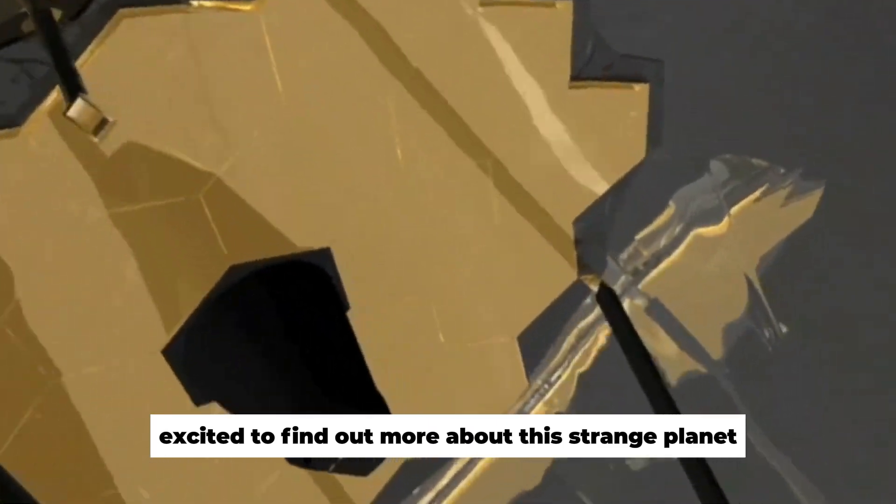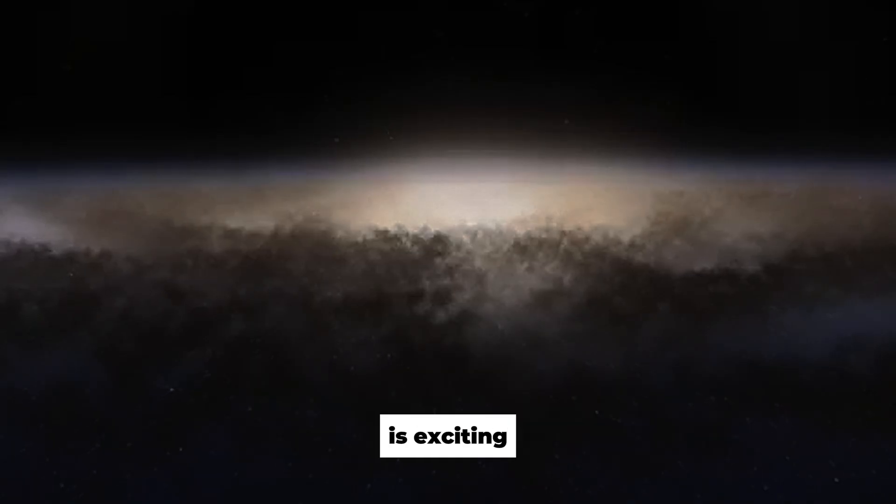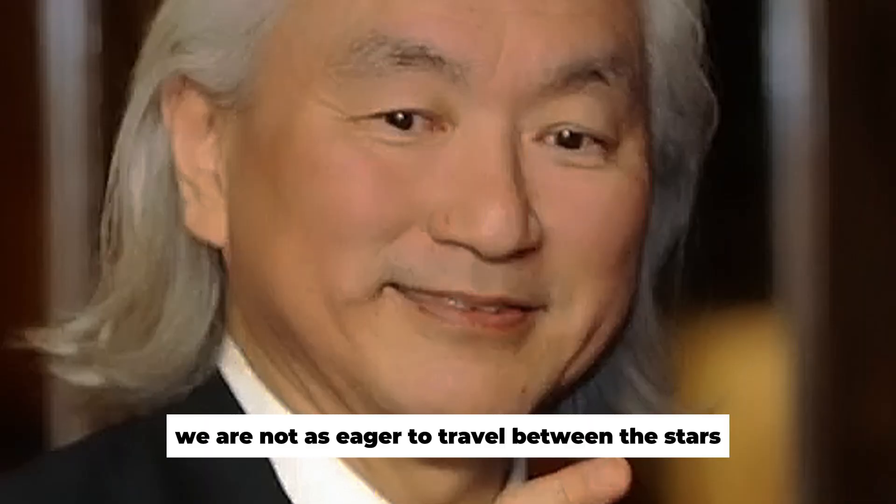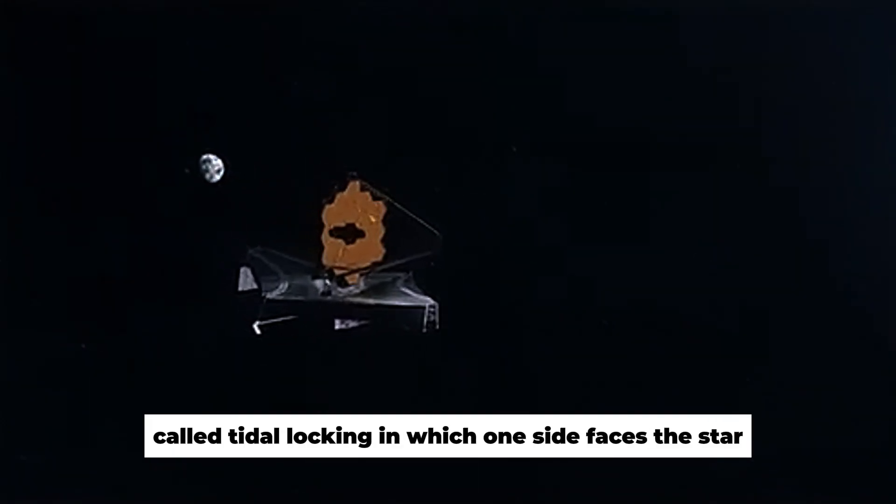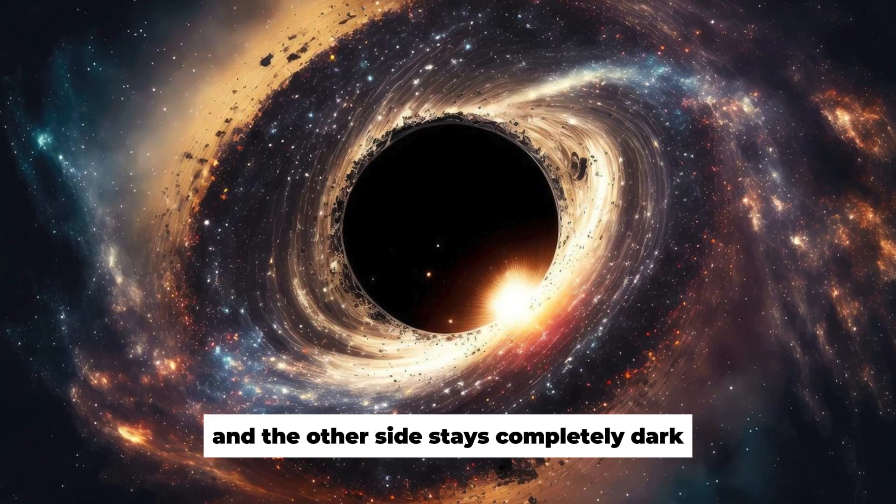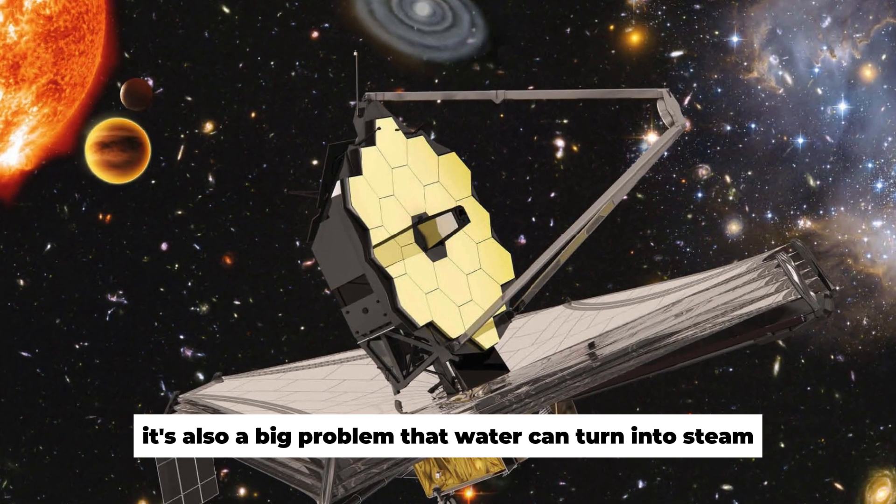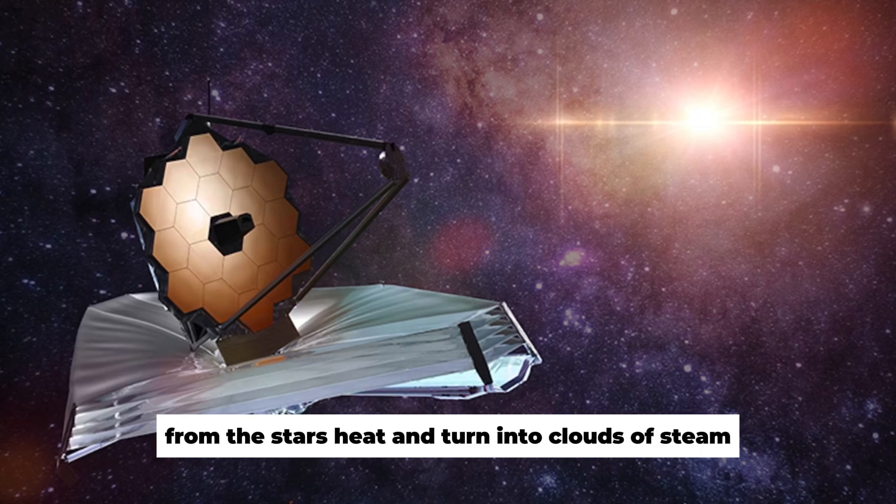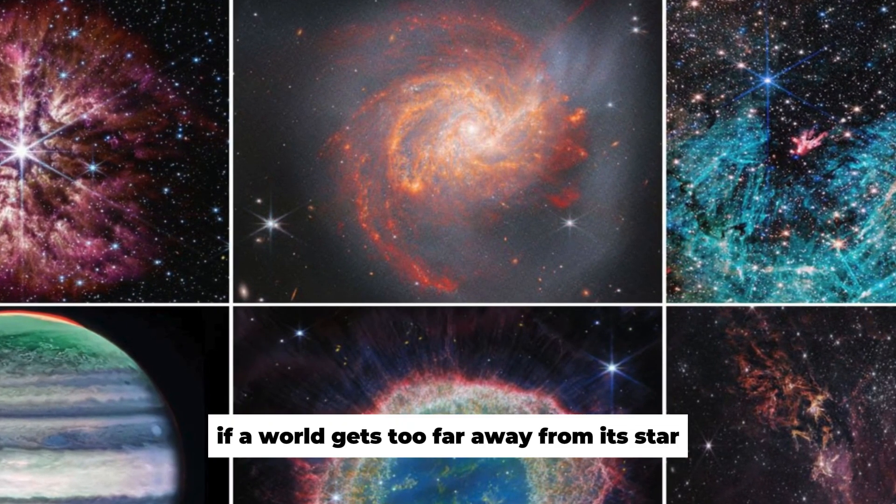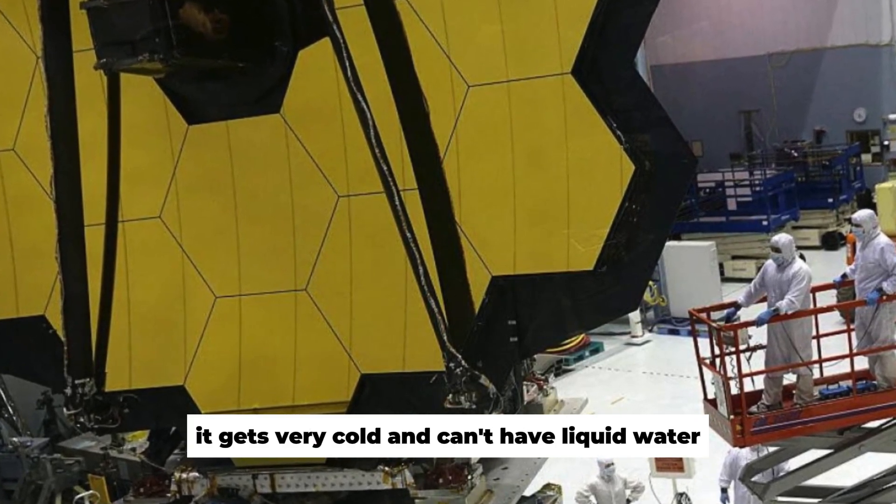Scientists are excited to find out more about this strange planet. Even though the idea that Proxima b might be home to aliens is exciting, we are not as eager to travel between the stars as we would like to be. One big problem is that Proxima b could be stuck in a state called tidal locking, in which one side faces the star and the other side stays completely dark. This isn't good for living things to grow. It's also a big problem that water can turn into steam. Any water near the star will quickly get very hot from the star's heat and turn into clouds of steam. If a world gets too far away from its star, on the other hand, it gets very cold and can't have liquid water.